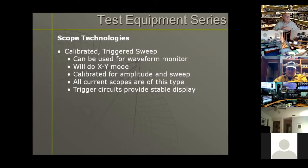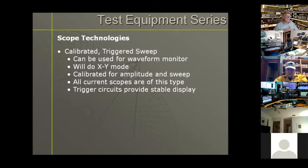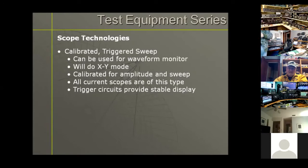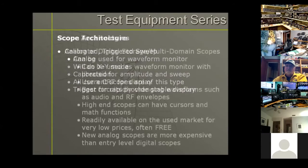Continuing with scope technologies: calibrated and triggered sweep scopes can be used as waveform monitors, used in XY mode, and are calibrated for amplitude and sweep so you can actually measure voltage and time, and inversely measure frequency. All current scopes are of this type — triggered sweep, calibrated for voltage and amplitude so you can measure voltage accurately, and calibrated for sweep times so you can get exact delay times, period times, and the inverse frequency of the signals you're looking at.